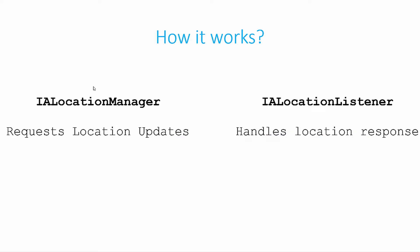Now let us see how this API works. To get location updates, there are two aspects to this service. One is the location manager and another is the location listener. You request location updates to the location manager and you handle the location updates in the location listener. Basically, the location manager delivers the location updates to the location listener.